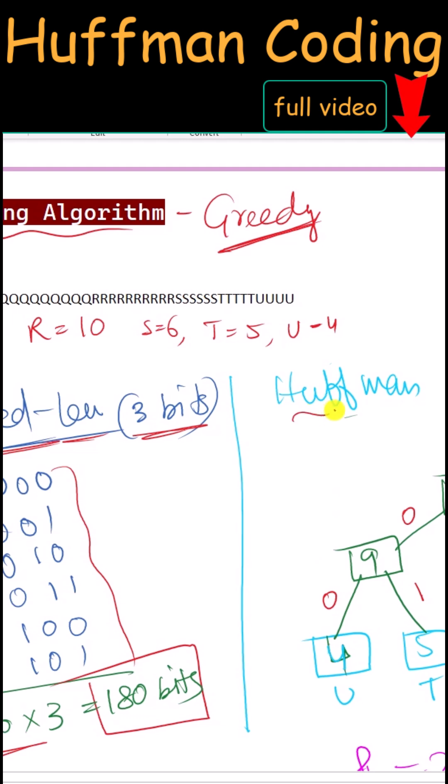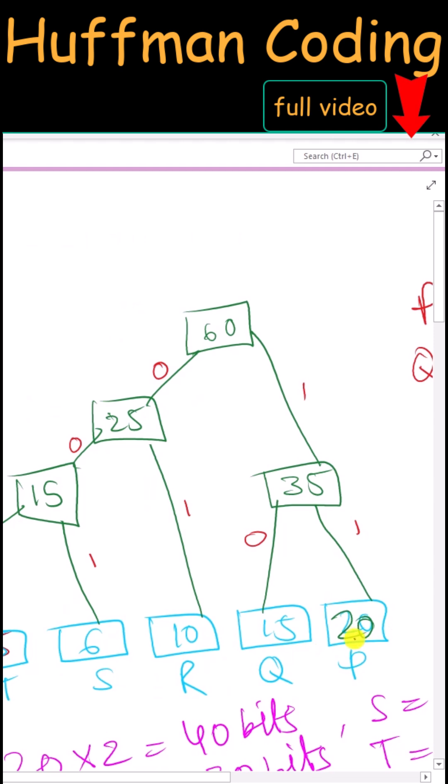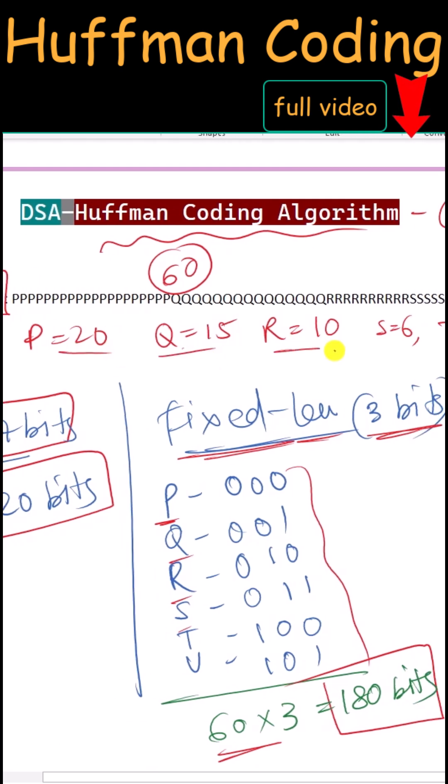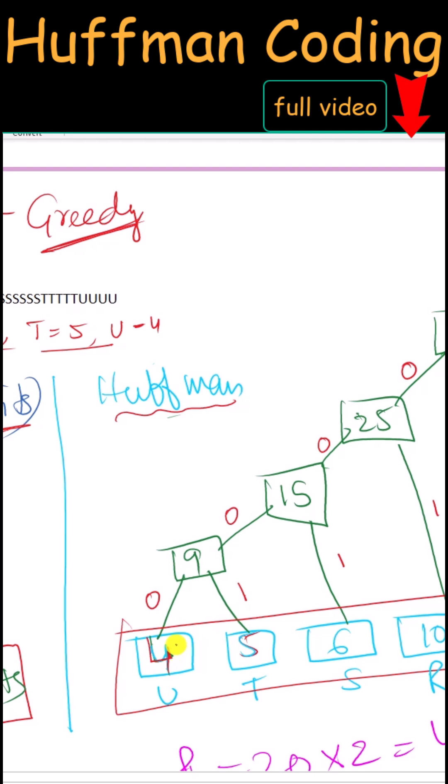Now in case of the Huffman coding algorithm, first of all we have to increasingly sort all of the characters based on their frequency in the message. From these frequencies we have to select two minimum frequencies and merge them in one node.